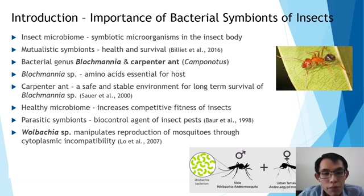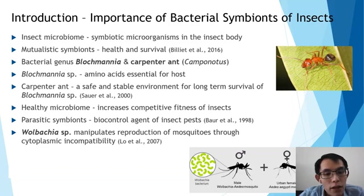In this example, the Blochmannia produce amino acids that are essential for the host, and in return the carpenter ant provides a safe and stable environment for long-term survival of the bacteria. This constitutes a healthy microbiome which could increase the competitive fitness of the carpenter ants.